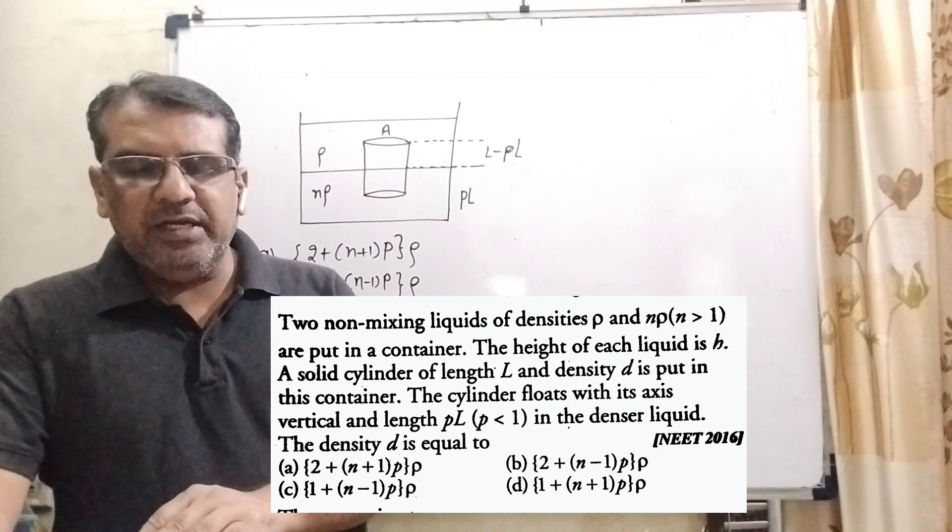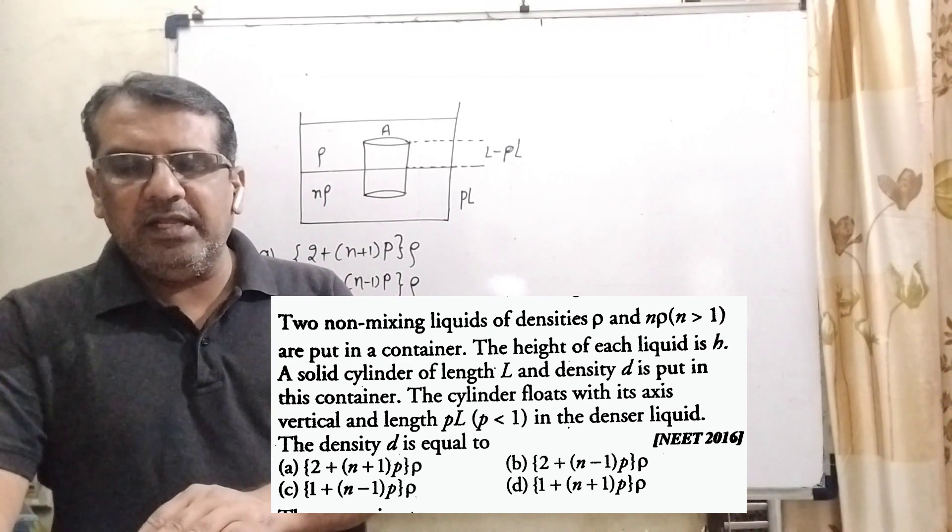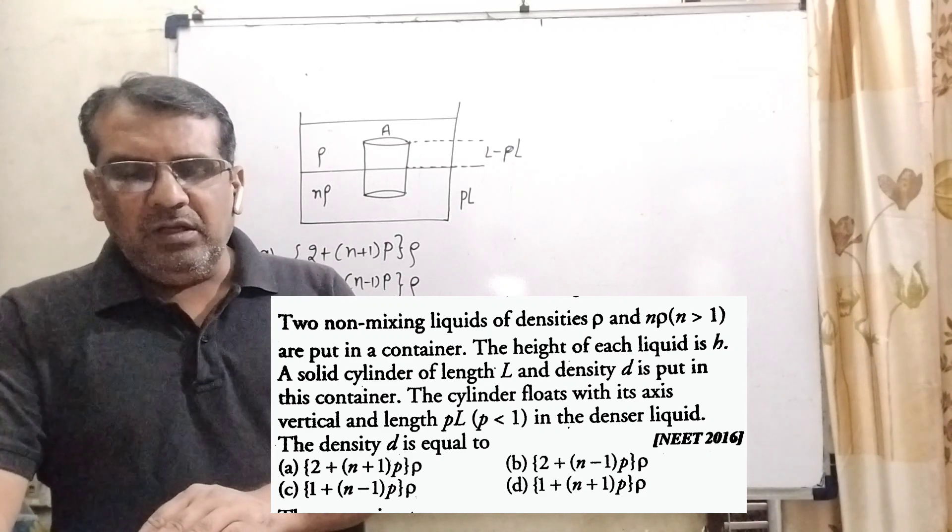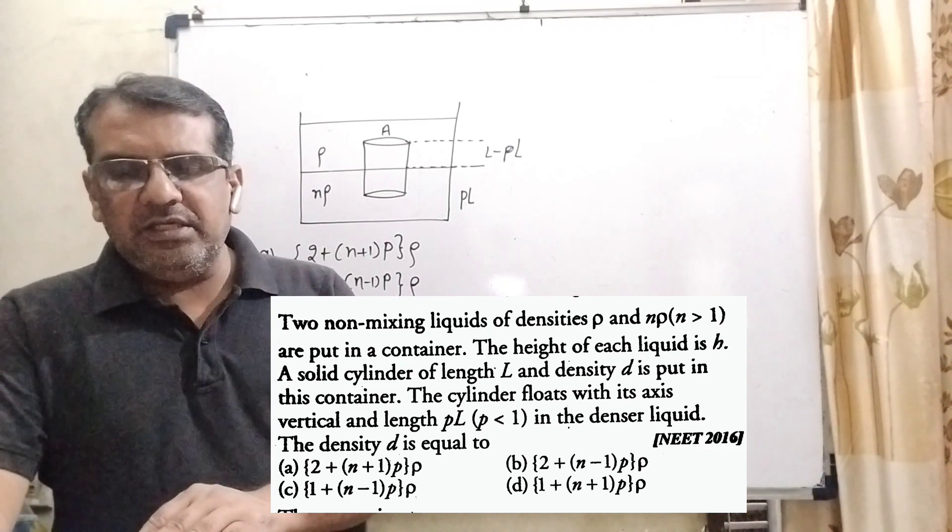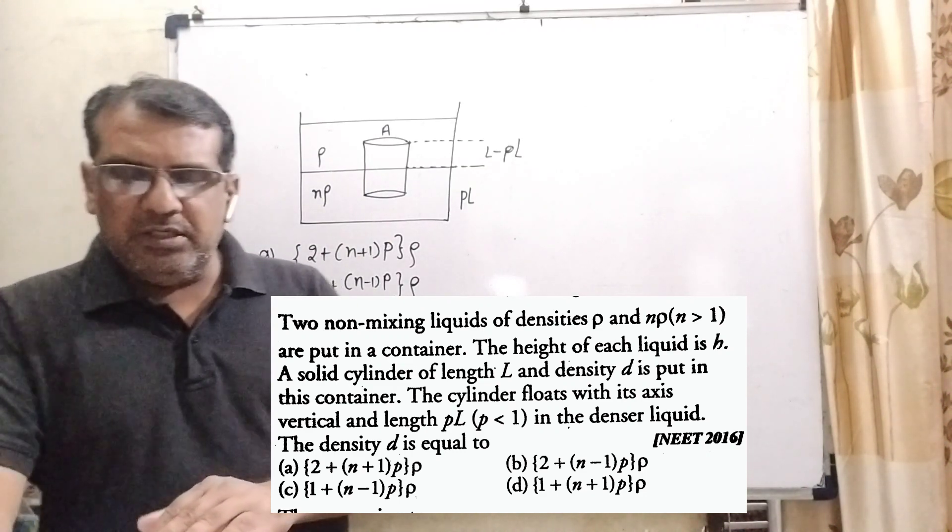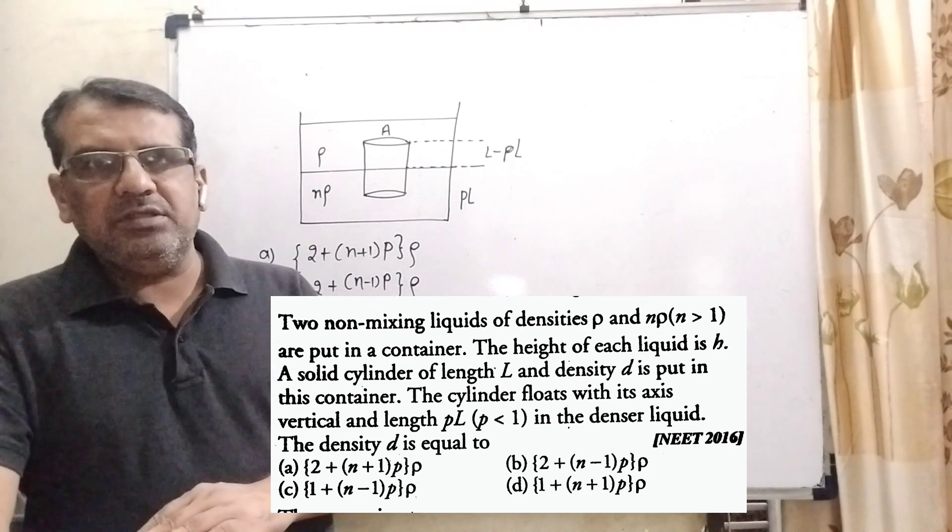The cylinder floats with its axis vertical and length pL, here p is less than 1, in the denser liquid. The density d is equal to what? Here we have given four options. This question was asked in JEE 2016.